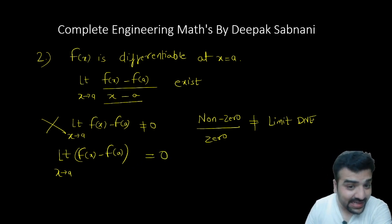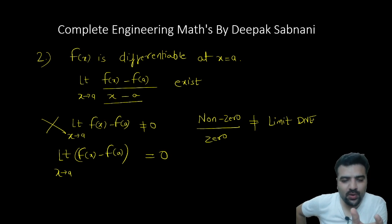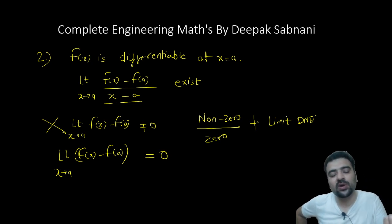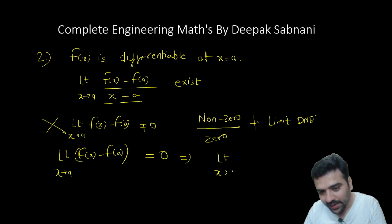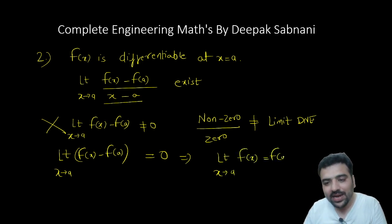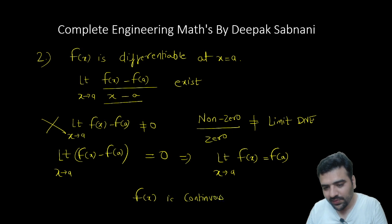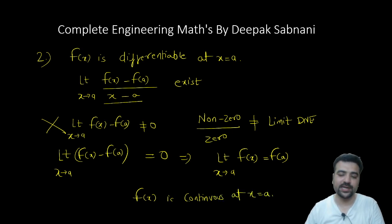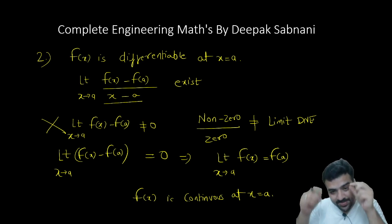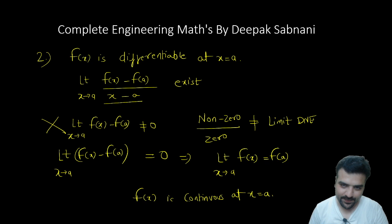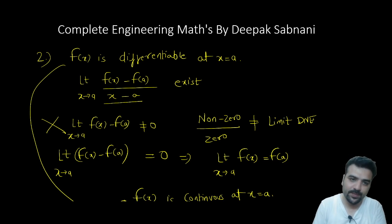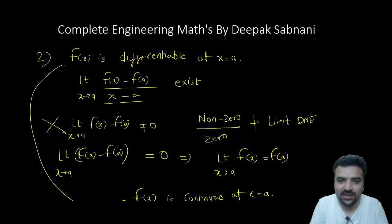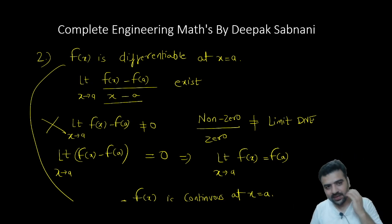So for the limit to exist, the numerator limit of [f(x) minus f(a)] must equal zero. This means limit as x tends to a of f(x) must equal f(a), which means f(x) is continuous at x equal to a. Therefore, if a function is differentiable at x equal to a, it is guaranteed to be continuous there. You don't need to separately check continuity.